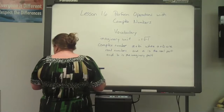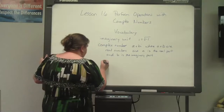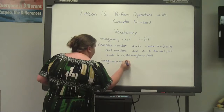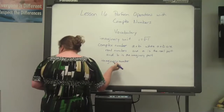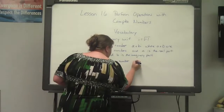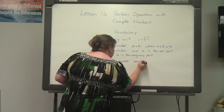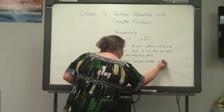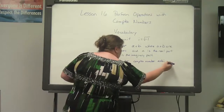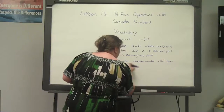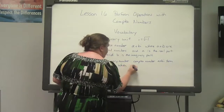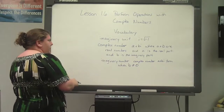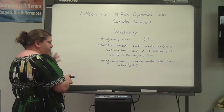The next vocabulary term is the imaginary number. That is a complex number in a plus bi form when b does not equal zero. So b cannot equal zero in a complex number.